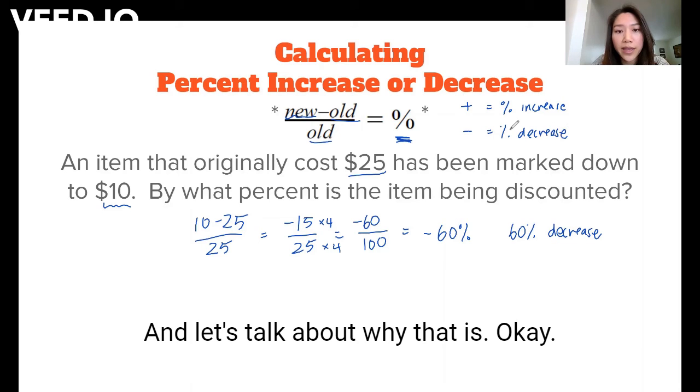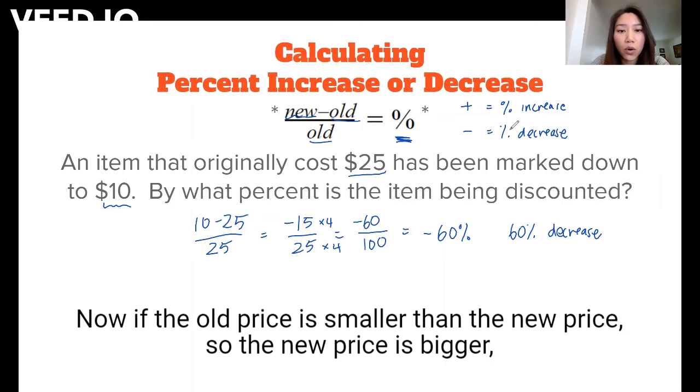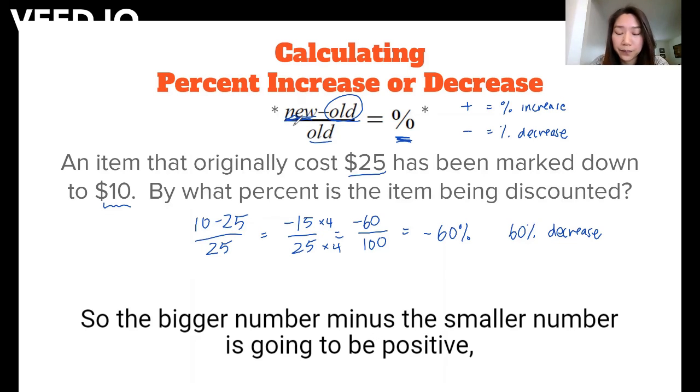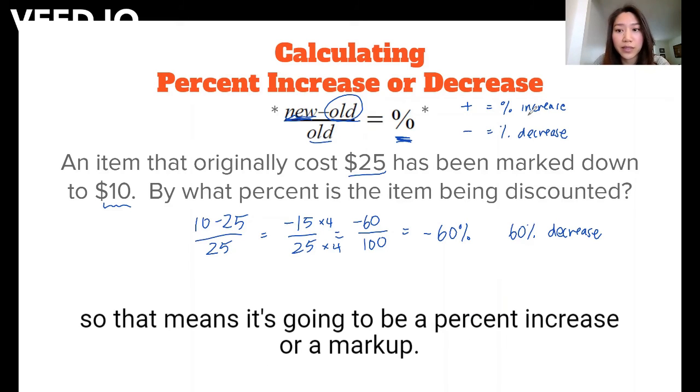And let's talk about why that is. Now if the old price is smaller than the new price, so the new price is bigger, that means that the price went up. So the bigger number minus the smaller number is going to be positive. So that means it's going to be a percent increase or a markup.